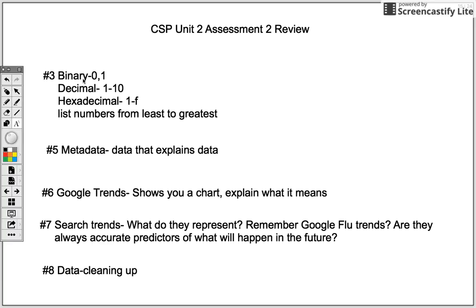Remember, binary numbers are just zeros and ones. And you have to know how to turn that into decimal, which is our regular number. Decimal is 1 through 10 — the numbers that we know how to use since the time we were born.